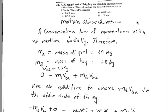But this problem is in the multiple choice questions as number 32, but we're going to work it out just as we will an exercise problem. A 30 kilogram girl and a 25 kilogram boy are standing on frictionless roller skates. The girl pushes the boy who moves off at 1.0 meters per second speed.